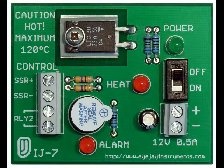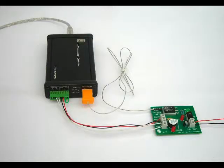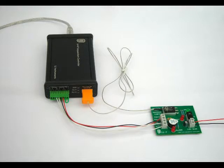For the novice user, the IJ7 demonstration module provides an ideal means of learning about the principles of PID temperature control and tuning. It connects to the controller and features a small heater and thermal block, alarm buzzer and indicator LEDs, enabling all the features of the controller to be explored fully. Full examples are provided of initial setup, PID and manual control, gain scheduling, relay control, tuning, file logging and temperature profile programming.